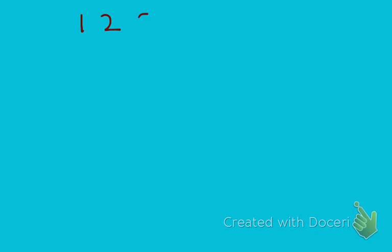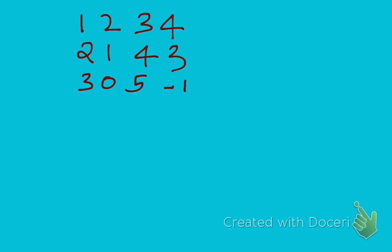To help you understand better, I have picked this question — this matrix. It is: 1, 2, 3, 4 / 2, 1, 4, 3 / 3, 0, 5, minus 10. So this is my matrix.